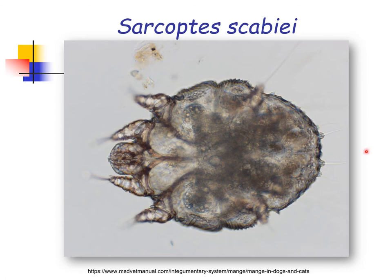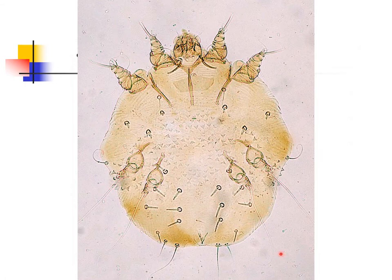This is a diagram of Sarcoptes scabiei under the microscope. The adult mites are about 0.2 to 0.6 millimeters long and roughly circular in shape. Their surface is covered with small triangular spines, and they have four pairs of short legs. Females are almost twice as large as males. Another diagram shows the triangular scales and spines on the dorsum, which are considered distinctive features of the parasite.